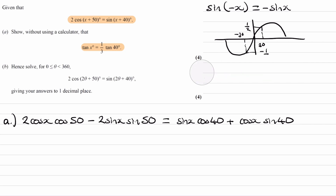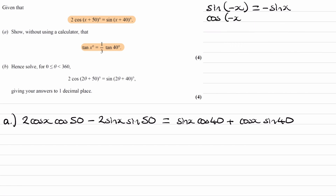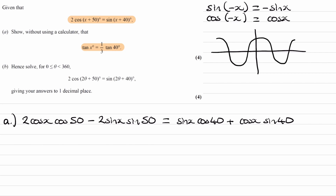We can get a similar rule for cos. The corresponding relationship is cos(−x) = cos(x), because a cosine graph is symmetrical. For example, cos(180) equals cos(−180); they both give you minus one.